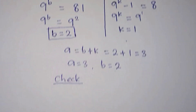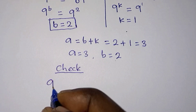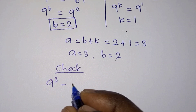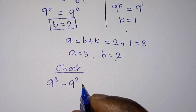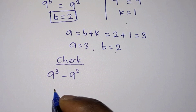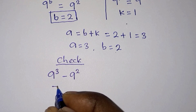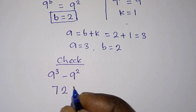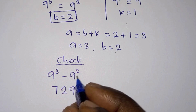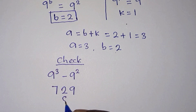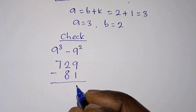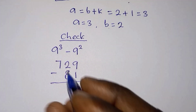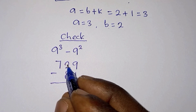With a equal to 3, we compute 9 to the third power, which is 729. With b equal to 2, we compute 9 to the second power, which is 81. Now let's find the difference: 729 minus 81.